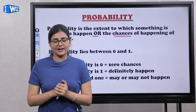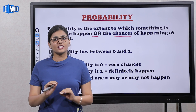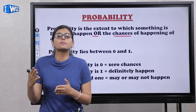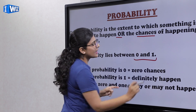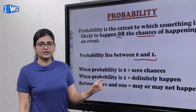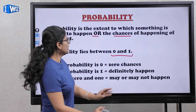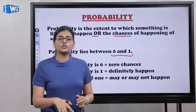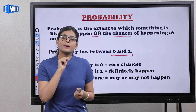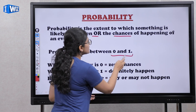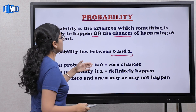Then you have another friend. You asked him if he will pass, and he says 'I will definitely top.' That means the chances of passing are full. So the probability lies between zero and one. If that event is impossible, its probability will be zero. If that event will definitely happen, then its probability will be one. If you are a bit confused about whether you will pass or not, the probability is between zero and one.